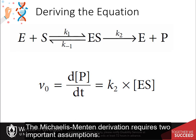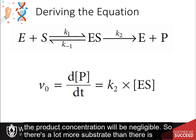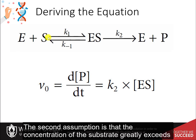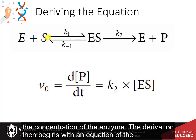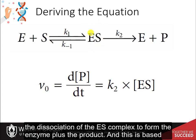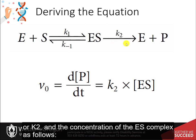The Michaelis-Menten derivation requires two important assumptions. The first assumption is that we are considering the initial velocity of the reaction, or V0, when the product concentration will be negligible, so there is a lot more substrate than product, such that we can ignore the possibility of any product going back in the reverse direction. The second assumption is that the concentration of the substrate greatly exceeds the concentration of the enzyme. The derivation then begins with the expression of the initial rate, or the rate of formation of product, which is dependent on the dissociation of the ES complex to form the enzyme plus the product, based on the rate constant K2 and the concentration of the ES complex.